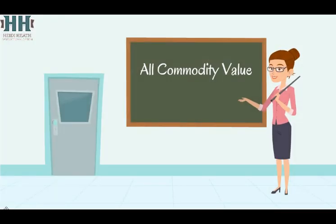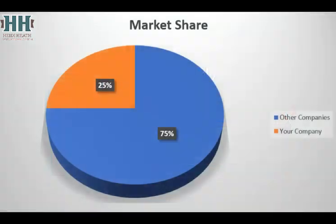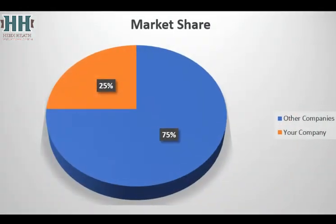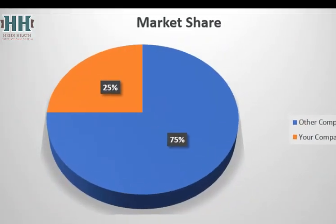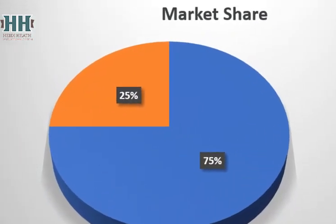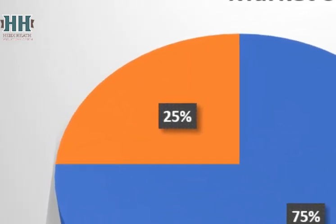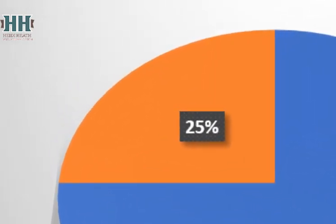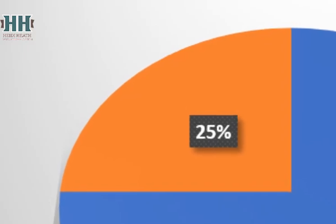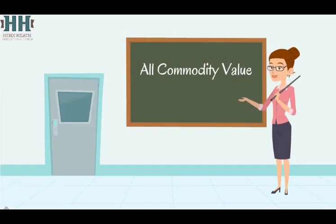All Commodity Value, or ACV, describes the fair share of a market or trading area. It is used to measure a product's performance. If you are a retailer and you hold 25% market share, then you should be capturing 25% of sales in every category. This would be your benchmark.